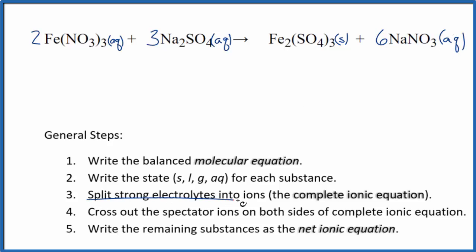Now we can split the strong electrolytes into their ions for the complete ionic equation. We don't know the charge on iron because it's a transition metal, but the nitrate ion is always 1 minus. Three times 1 minus is 3 minus, so the iron has to be 3 plus. So we'll have 2 iron 3+ ions.